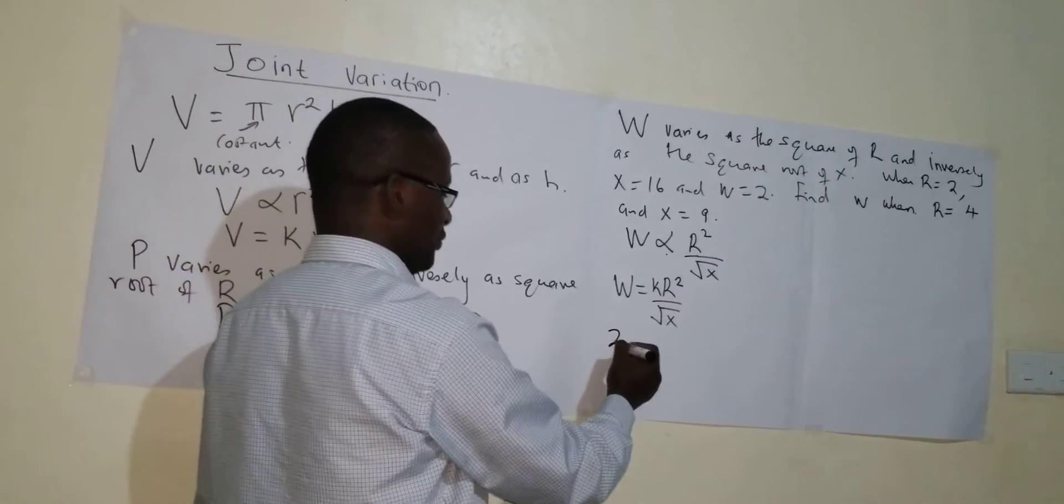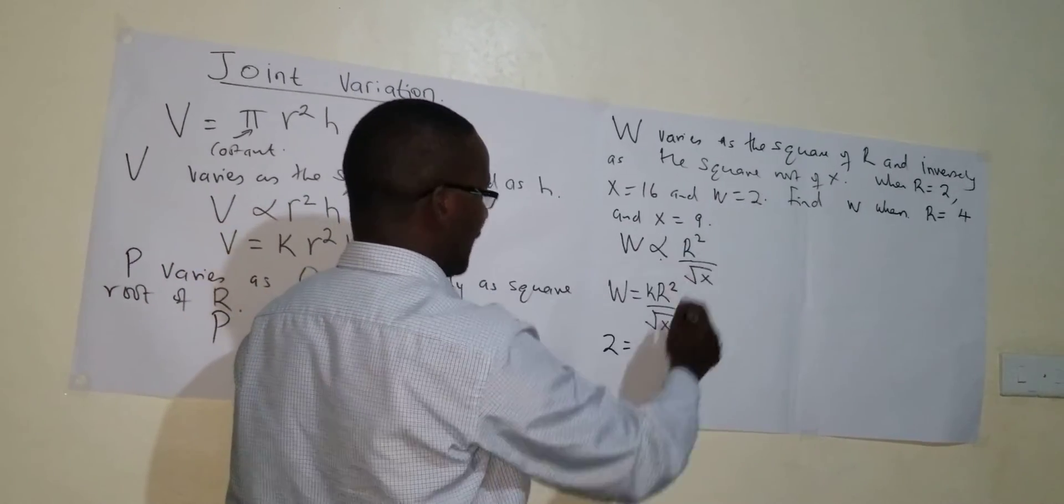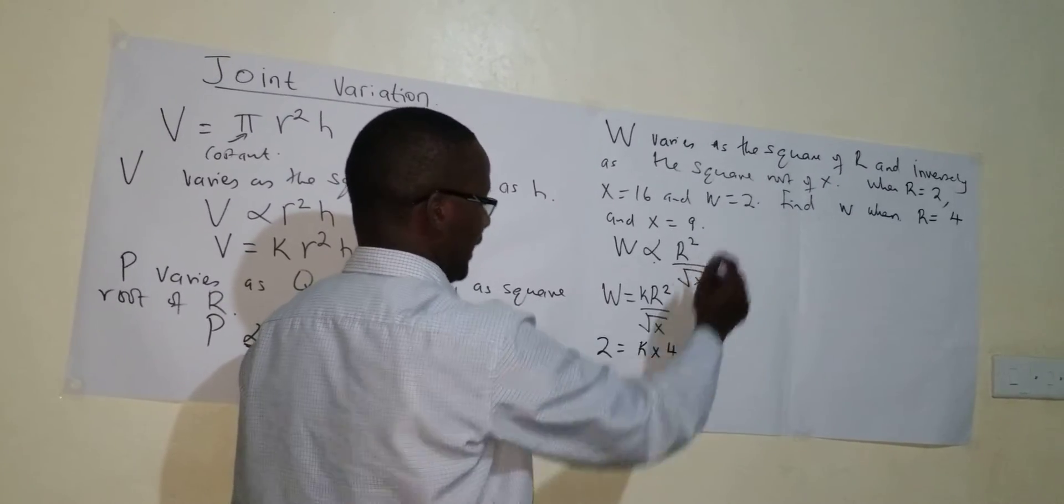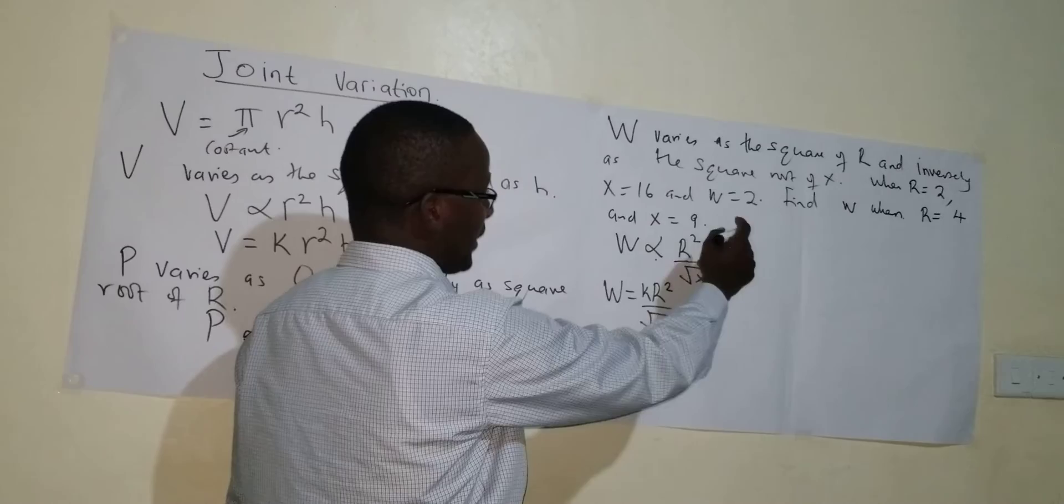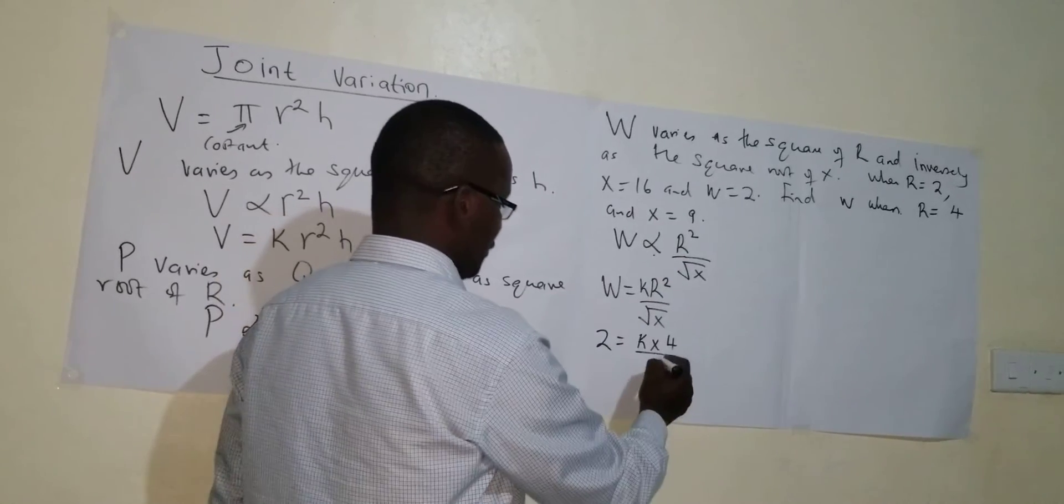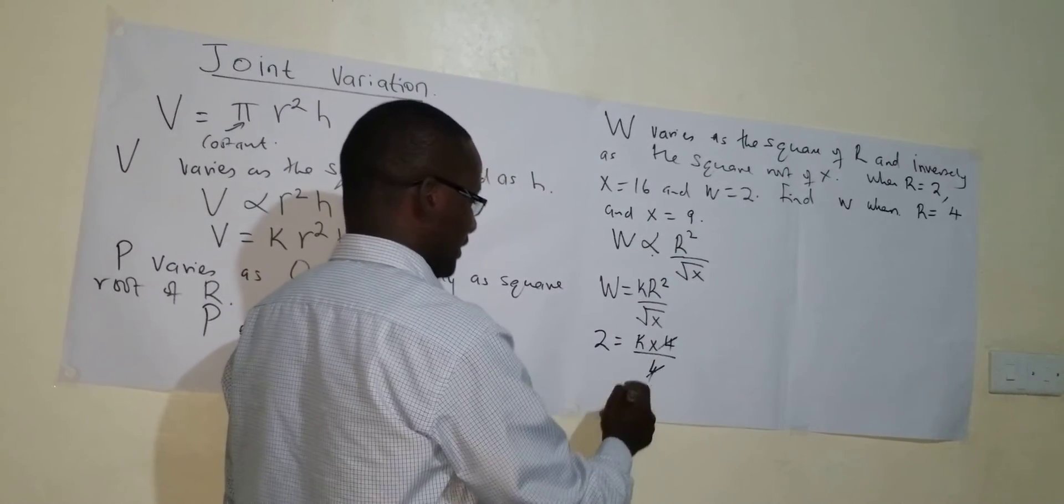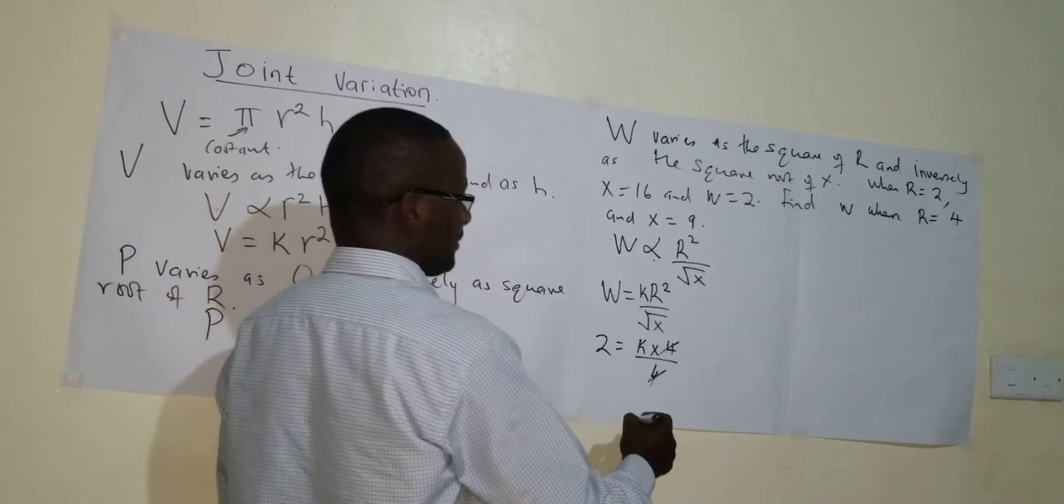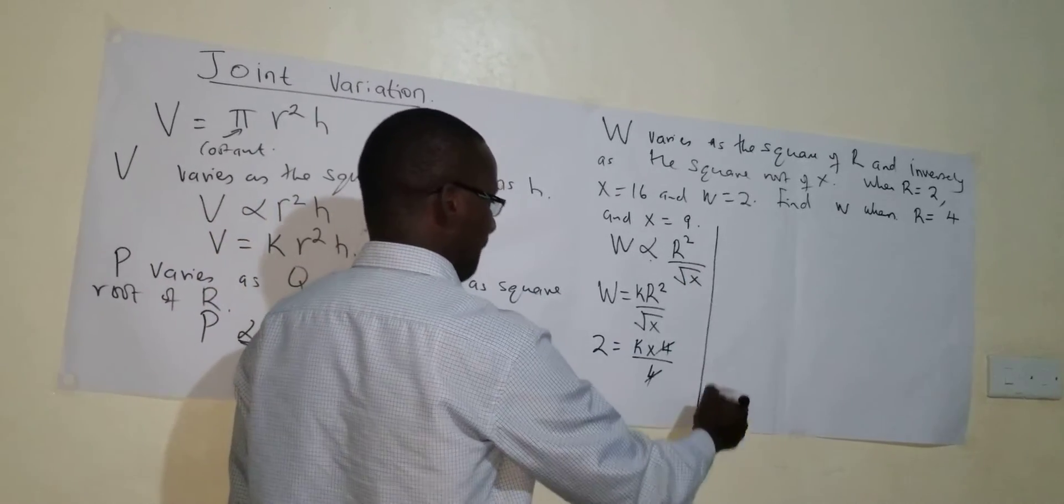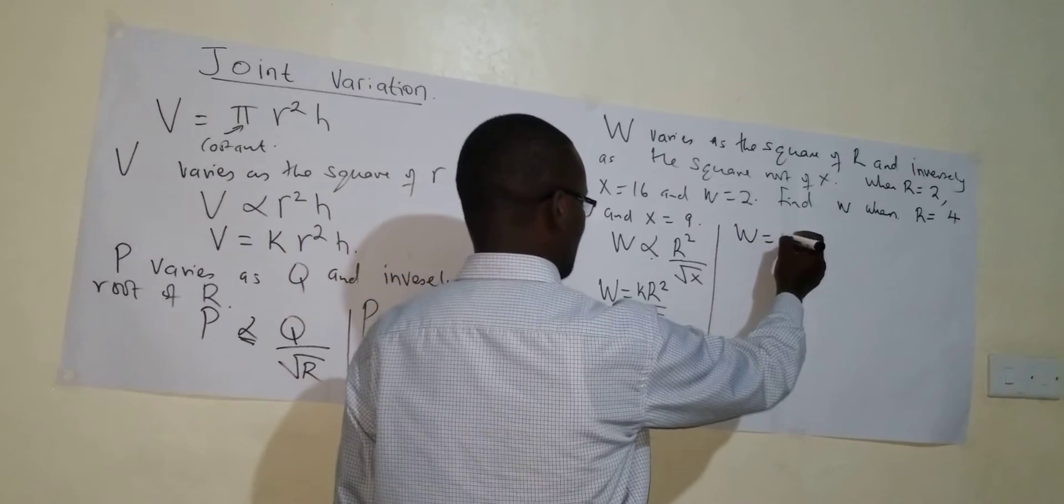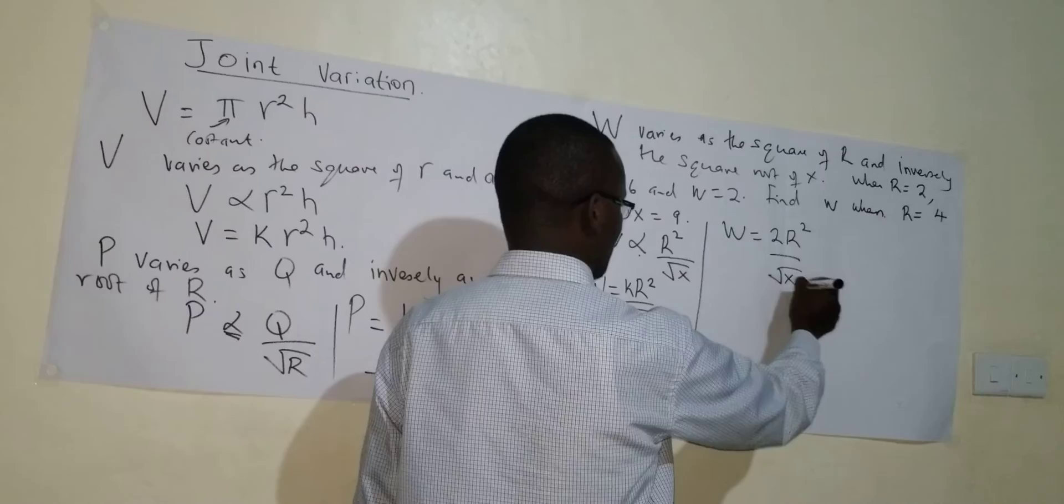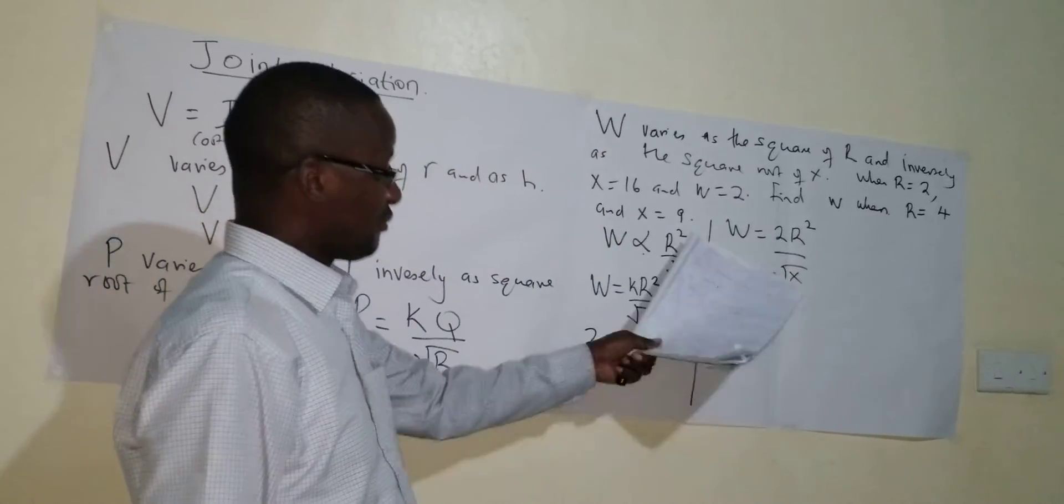You are told that when W is 2, R is also 2. So K times 4, R squared over the square root of X which is also 4. So this one cancels and you get K is 2. So my equation becomes W is equal to 2 R squared over the square root of X as the equation.